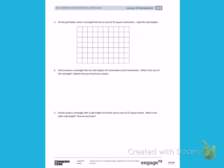This is Module 4, Lesson 8, Side 2. Number 3: On the grid below, draw a rectangle that has an area of 32 square centimeters. Label the side lengths.